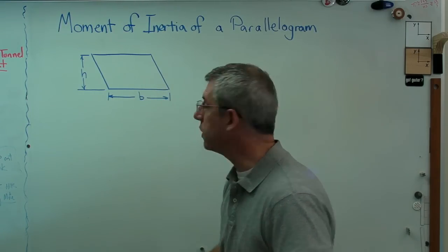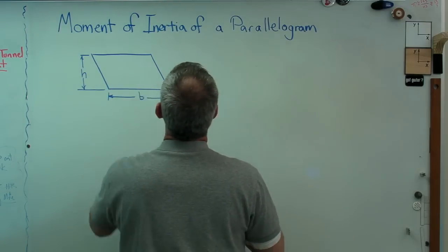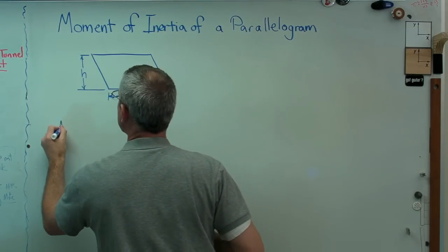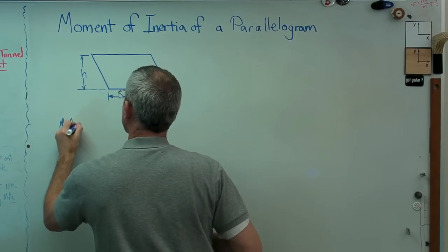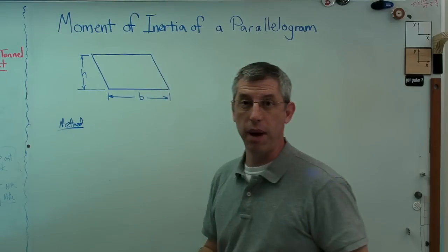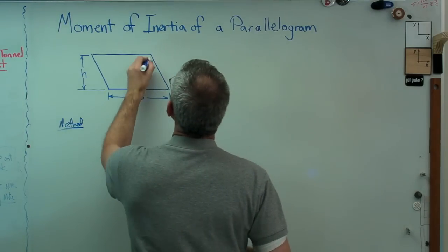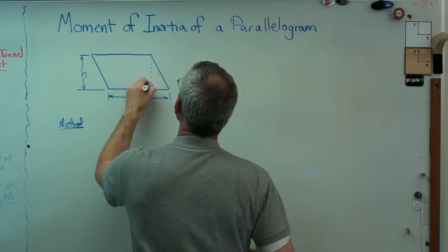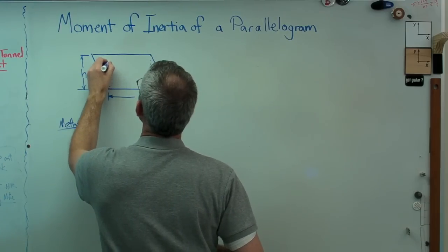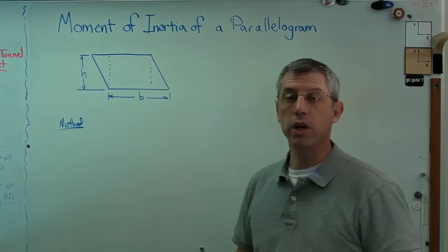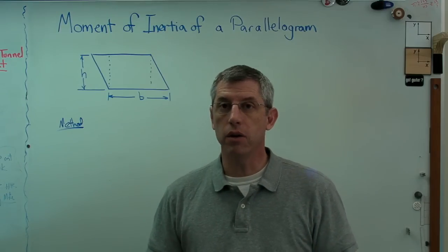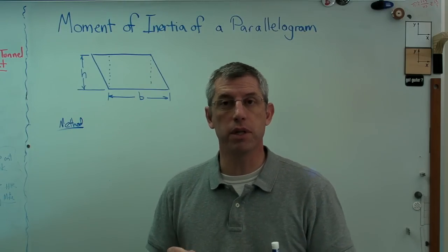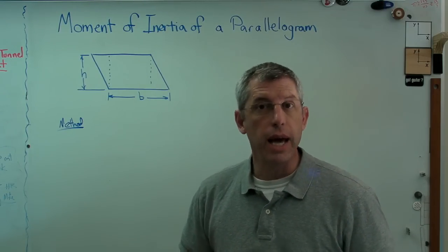I'm going to show you two or three different ways to do this. Let's start with method one here, and this is almost more of a geometric than a mathematical argument. Let's take this parallelogram and divide it up into three pieces, because when you have a complicated cross-section, what we know how to do is break it up into a bunch of little simpler shapes and add all the effects of those up.